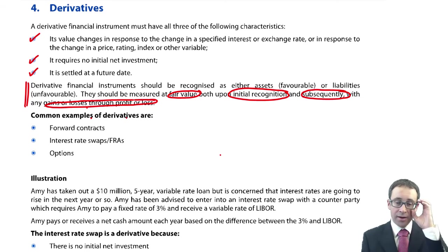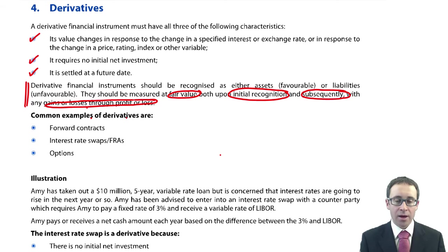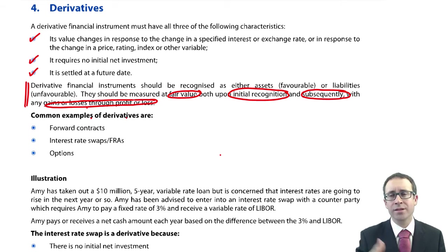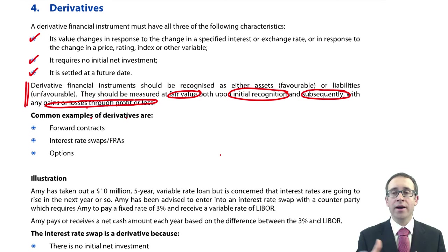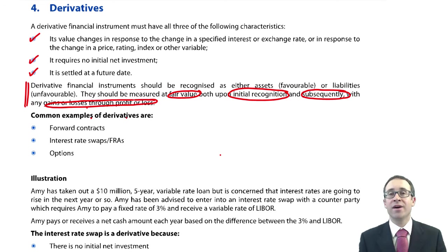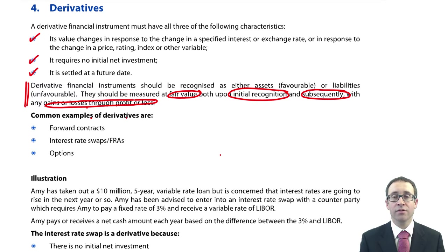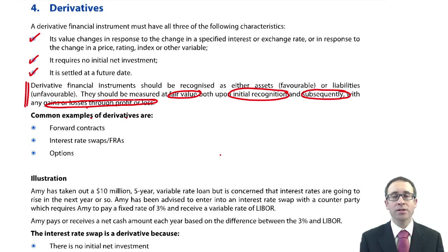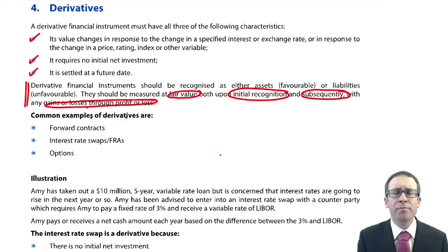In terms of examples of derivatives, you've got them in the notes — you can learn them or apply your knowledge in the exam. A forward contract, which you've seen in F9, is an agreement to buy a fixed amount of foreign currency at some point in the future. As the rates on the open market change, your forward contract may be favourable or unfavourable, there's no net investment required, and it's settled in the future for cash. Interest rate swaps and FRAs are also derivatives — we'll talk about interest rate swaps in a moment, though FRAs are getting into the world of P4.